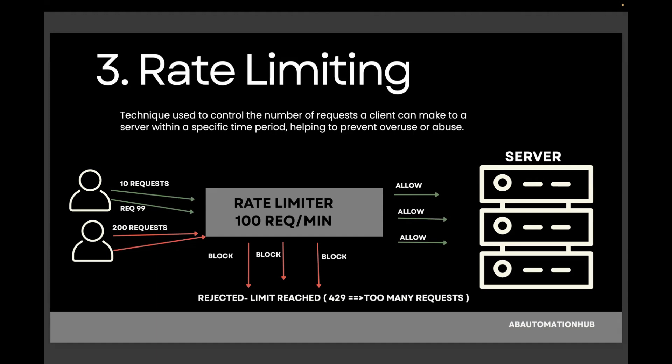Why is rate limiting used? It prevents API abuse and protects server resources. In this diagram, the rate limiter is configured for 100 requests per minute. If a user makes 99 requests per minute, it will be allowed. But if a bot or spam user hits 200 requests per minute, that request would be blocked. Imagine using an ATM where you're allowed only 3 withdrawals per day — if you try a fourth time, the machine says limit exceeded. That's rate limiting: controlling how many requests or actions you can make in a given time.